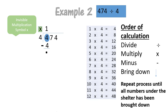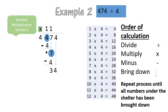Then we start the order of calculation again. Can four go into zero? No, it can't because zero is smaller than four. Then we have a look underneath the shelter — we have the next number, number seven. We can bring it down. We say four goes into seven once, and one times four equals four. Then our next step is to subtract: seven minus four equals three. Then we start the order of calculation again. Four needs to go into number three, but it can't because three is smaller than four. Then we bring down our next number underneath the shelter, which is a four, and now we have 34.